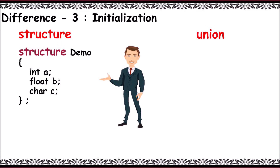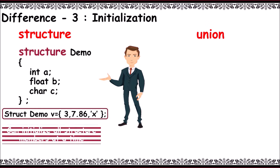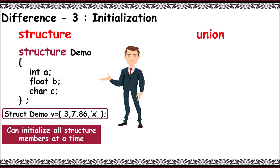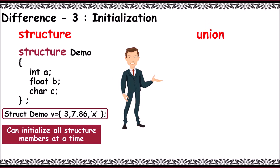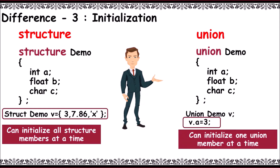The third difference is on initialization. In structures, we can initialize values to all members at once — like 'struct demo v = {3, 7.86, x}' — that is, we can initialize all structure members at a time. But in union, we can initialize only one member at a time — for example, 'v.a = 3'. So in union, one member can be initialized at a time.